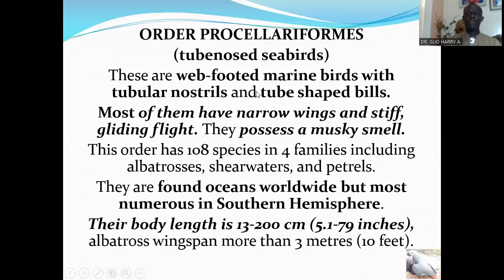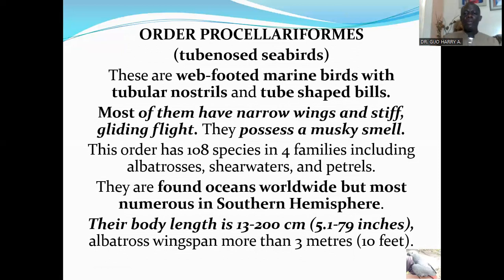The next order is Order Procellariiformes — the tube-nosed seabirds. These are web-footed marine birds with tubular nostrils and tube-shaped bills. Most of them have narrow wings and a stiff gliding flight. They possess a musky smell. This order has 108 species in four families, including albatrosses, shearwaters, and petrels. They are found in oceans worldwide, but are most numerous in the southern hemisphere. Their body length is 13 to 200 centimeters. The albatross wingspan can span more than 3 meters — that's 10 feet — the longest wingspan found in birds. Here are the grey-headed albatrosses, a mother and child.